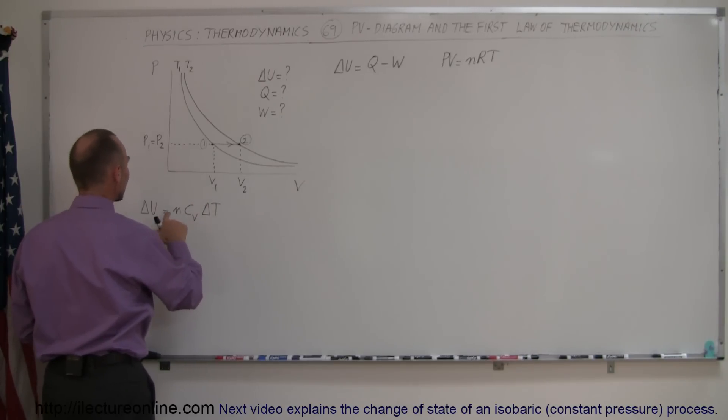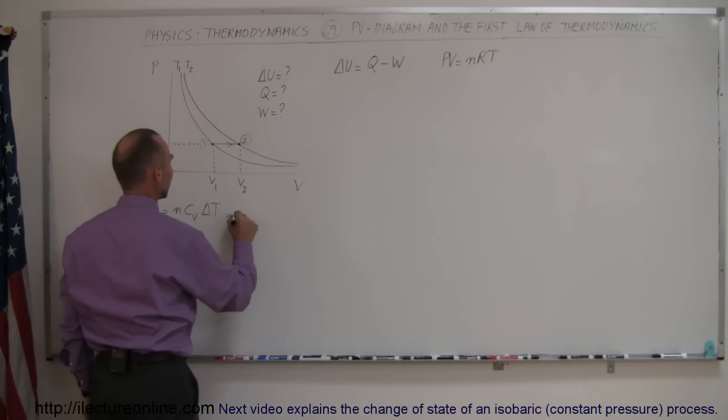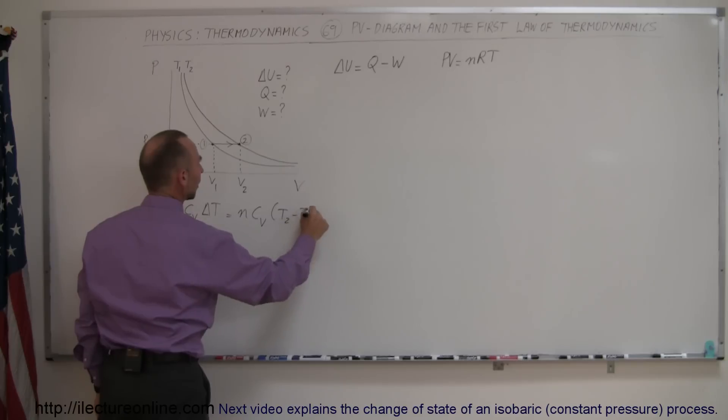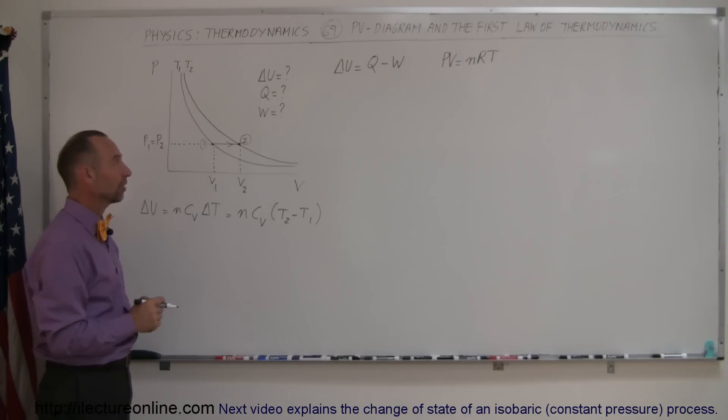Notice it's always C sub V when we're related to the change in internal energy. Since we know the temperature changes from temperature 1 to temperature 2, because these are what we call isotherms, we can say that this is equal to nC sub V times T2 minus T1. Since T2 is larger than T1, then we can say that the change in internal energy is positive.